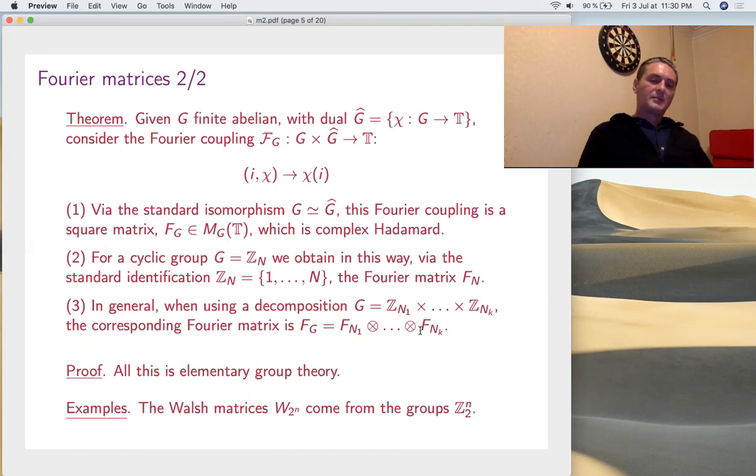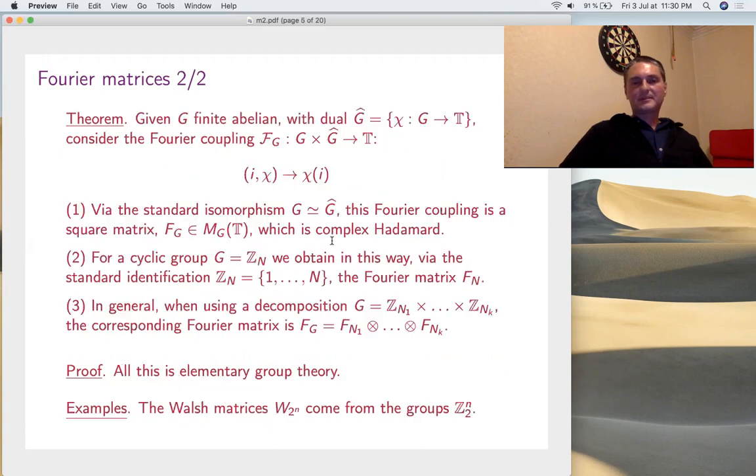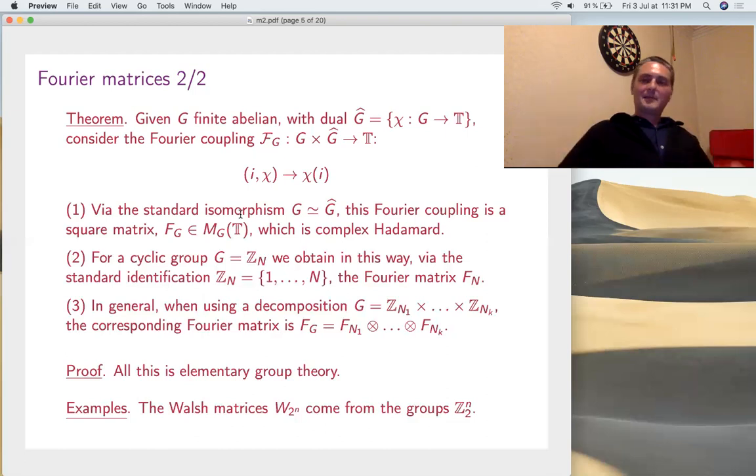As examples, we have the Fourier matrix before. Any Fourier matrix of finite abelian group is a tensor product of guys like this. Also, the Walsh matrices, remember, these are obtained from W_2 by tensoring with itself n times, but W_2, the first Walsh matrix, is F_2. If I plug in n is 2, that's my matrix, and the root of unity is minus 1. So, it's 1, 1, 1, minus 1 is the first Walsh matrix. Now, if you tensor with it 10 times, you get the higher Walsh matrices.